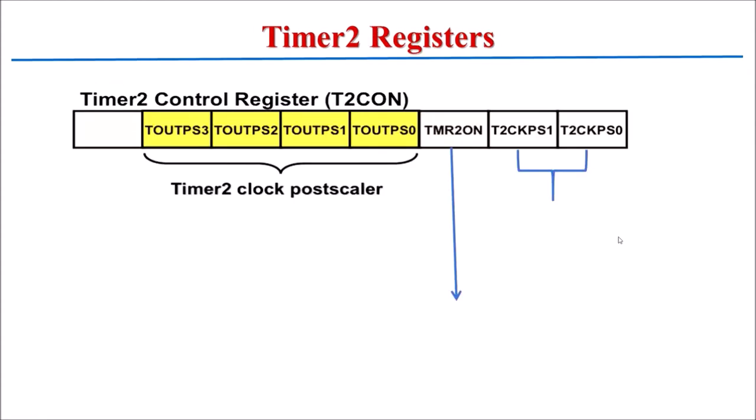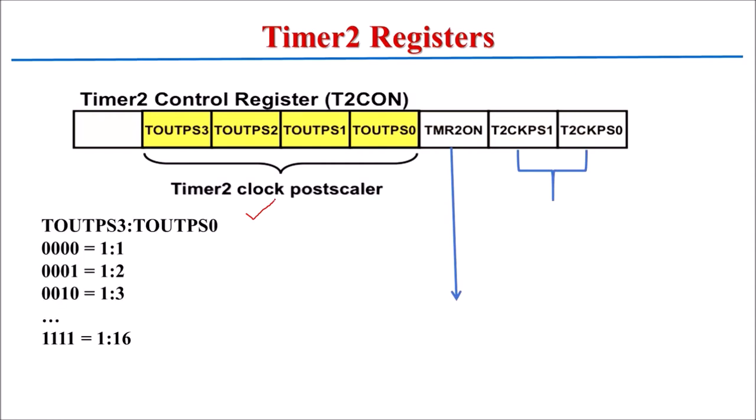Now let's go through the registers used for Timer 2 operation. The T2CON register is the Timer 2 control register. It has bits for the T2 clock post-scaler, which are used to post-scale the timer value — divide by 1, divide by 2, up to 16 options are available. Generally we store 0x00 here, using the F_oscillator frequency divided by 4.